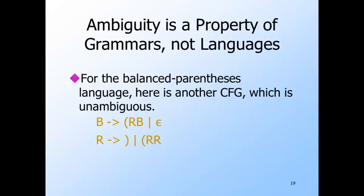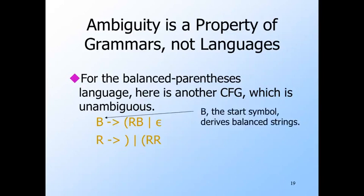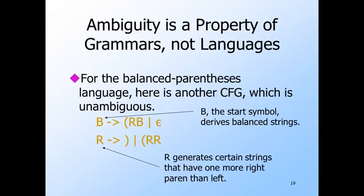Fortunately, just because one grammar for a language is ambiguous does not mean we can't find another grammar for the same language that is unambiguous. Here is an unambiguous grammar for balanced parentheses. Variable D, the start symbol, generates all balanced strings. Variable R generates all strings that are balanced except for having one more right parenthesis than left — meaning no prefix of the string has more right parentheses than left. Examples generated by R include a single right paren, left-right-right, and longer such strings.